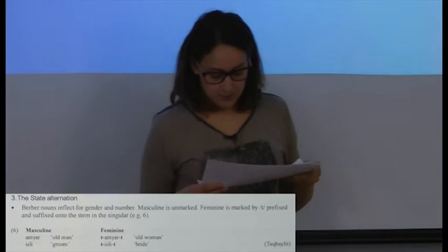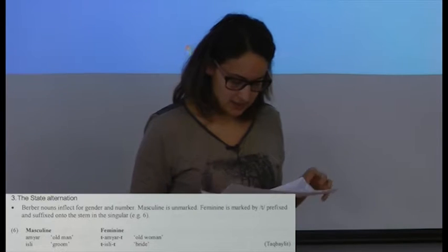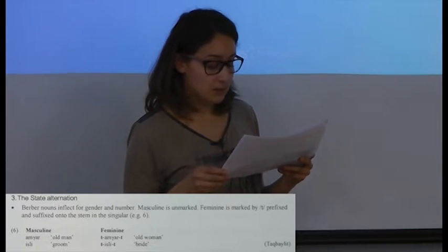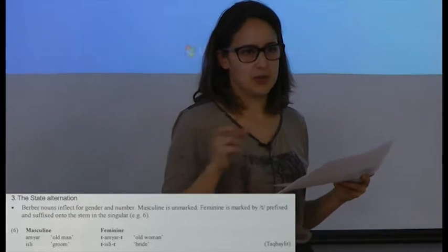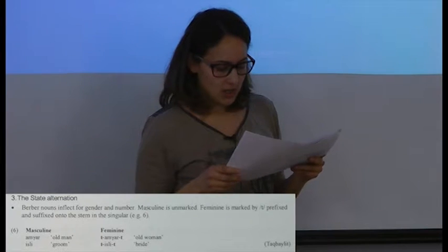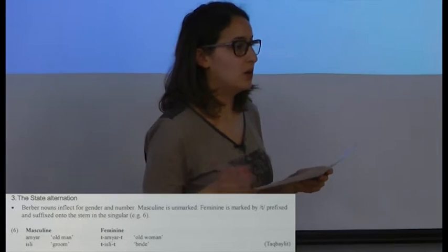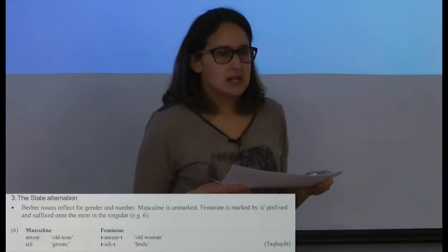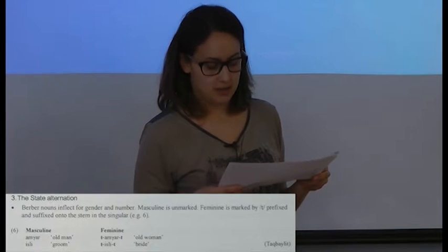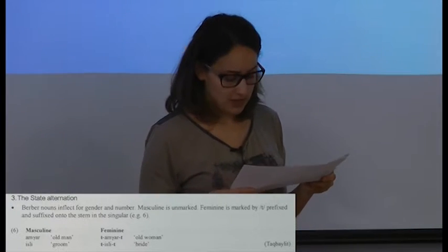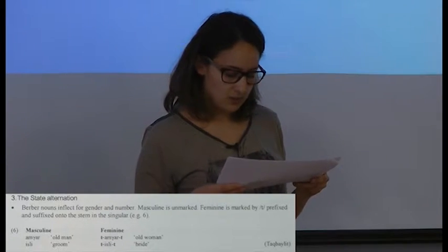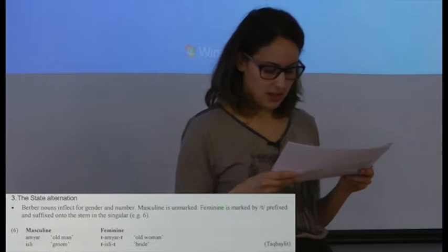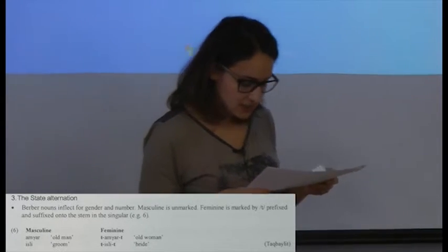Now I'll discuss the state alternation, starting with a brief description of how it is marked morphologically and some background on noun morphology. Masculine gender is unmarked; the feminine is marked by 'te-,' prefixed and suffixed onto the stem in the singular. For example, 'amrach' (old man) becomes 'tamracht' in the feminine, and 'isli' (groom) becomes 'tislit' in the feminine.